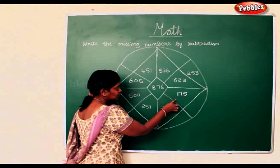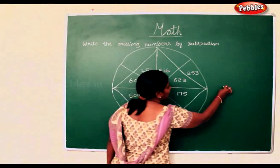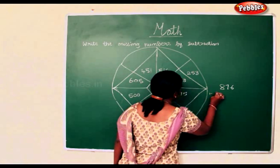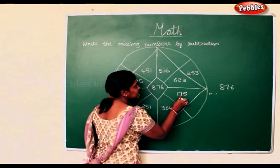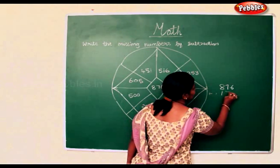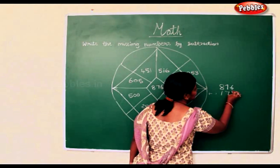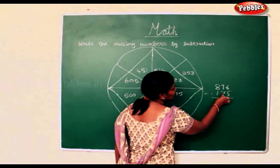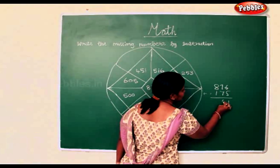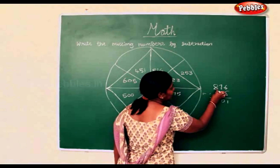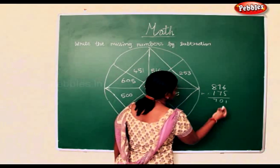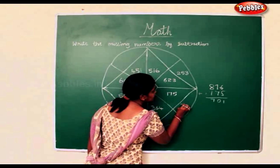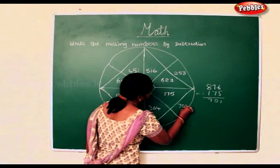Now same way we will do this. 876 less 175. 6 take away 5 is 1. 7 take away 7 is 0. 8 take away 1 is 7. So the missing number here will be 701.